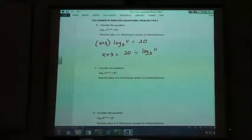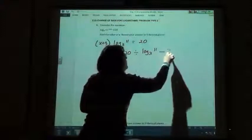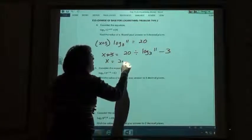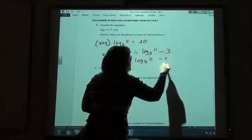You minus. Exactly, because it's a plus, I've got to minus. So I'm going to minus it and move it over here. So x is going to equal 20 divided by the log base 3 of 11 minus 3.